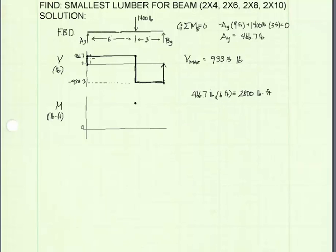That's the area underneath this shear diagram. The last 3 feet of our moment diagram will take us with a negative slope back to 0. So the max moment that we'll be using to design the beam will be 2800 pound feet.